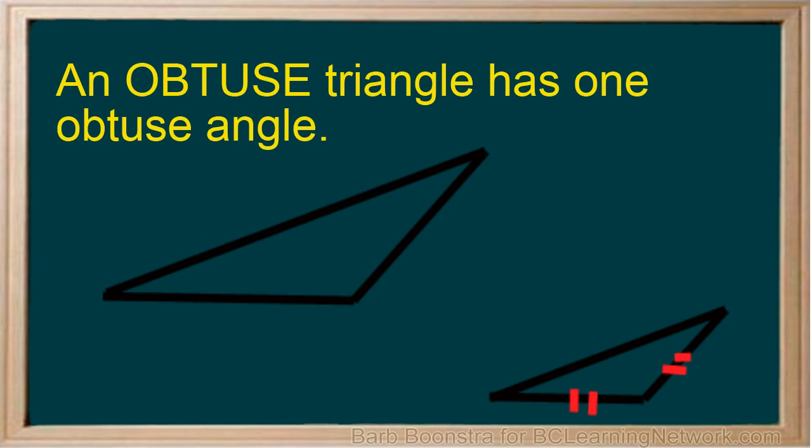An obtuse triangle has one obtuse angle. Notice again that obtuse triangles can also be isosceles triangles.